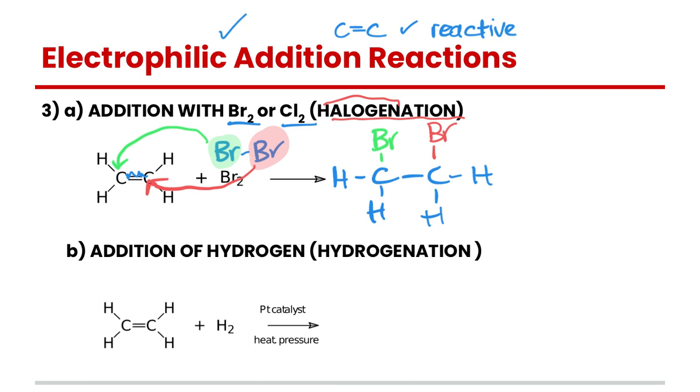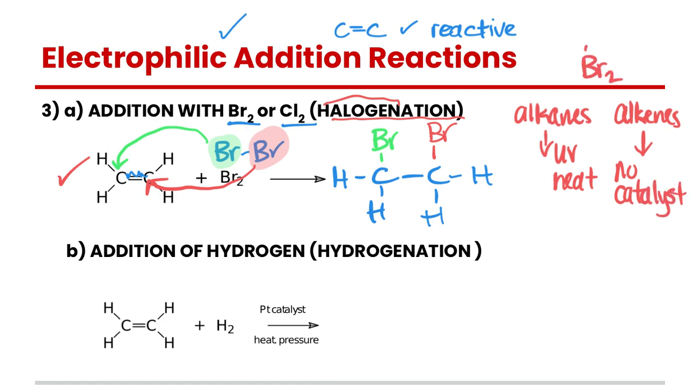Before we get into the next one, this reaction is a really handy one to have because if you remember with alkanes they'll react with bromine or chlorine but they require UV or heat as a catalyst. Alkenes on the other hand are more reactive so no catalyst is required. The reason why I'm bringing this up is because if you react both of them with bromine, bromine is like a reddish kind of brown color,